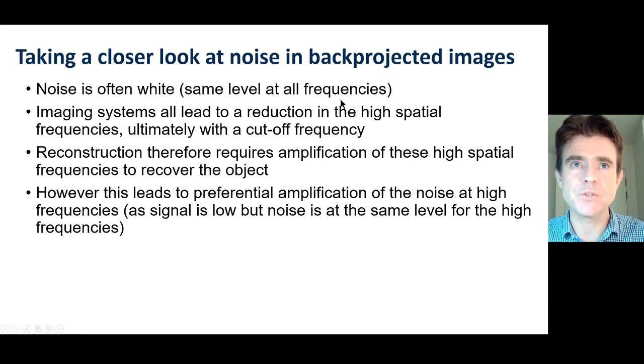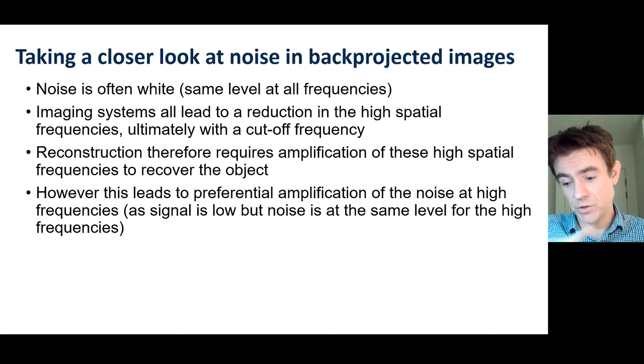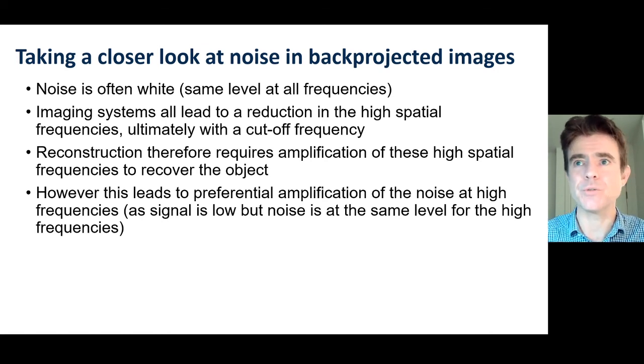But what did we say at the start? Often for data that we're trying to reconstruct from, the noise is white, and it's the same level for all frequencies. But if we're doing this reconstruction which has a preferential amplification of high frequencies, it should be no surprise that we end up with high frequency noise a lot of the time in our reconstructions. The signal is also low at those high spatial frequencies. The true object spectrum is going down. And yet, the noise doesn't really decay much with spatial frequencies, more or less flat. So it's a pretty tough deal in terms of this reconstruction process, the inverse problem we're often trying to solve in medical image reconstruction.